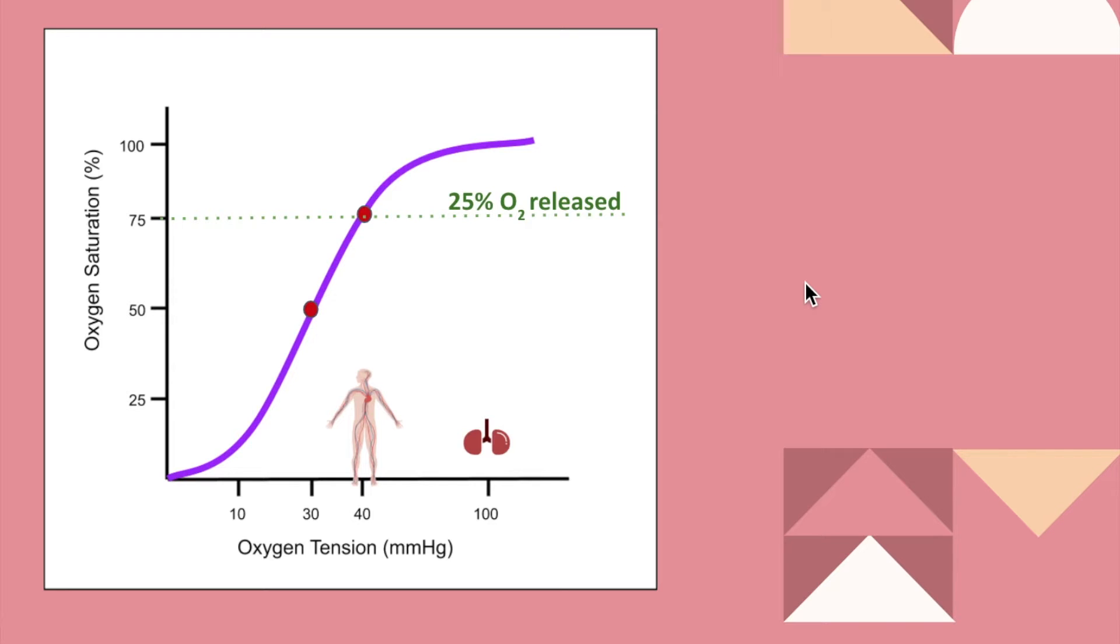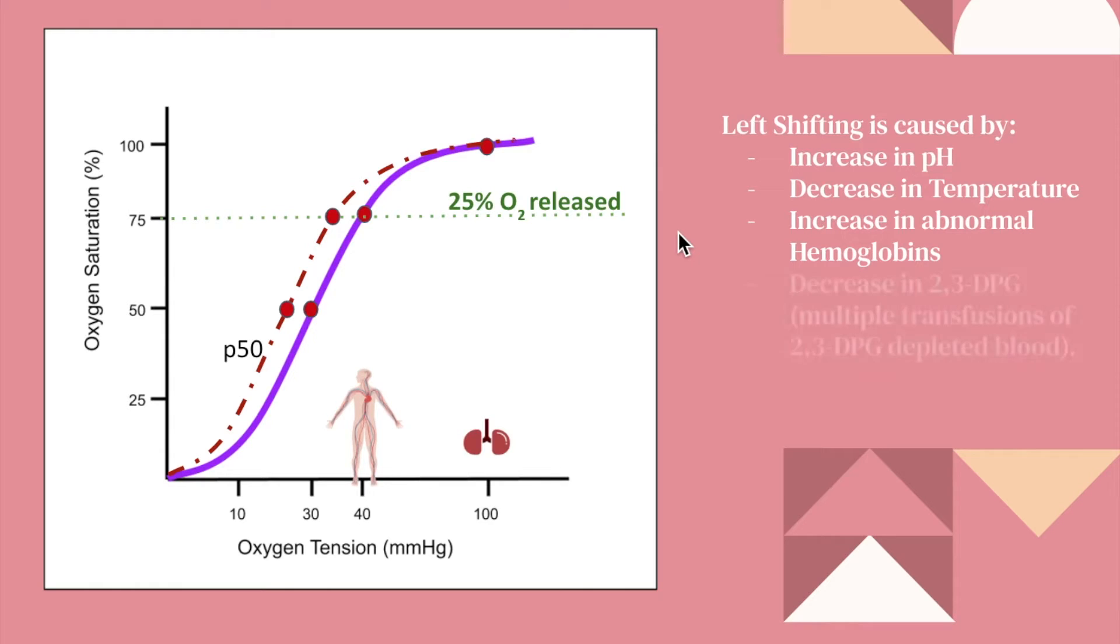So we're going to talk about left shifting now. So what does that mean? That means you're not giving away your oxygen readily because it's complete opposite from the one earlier. So what's the causes of left shifting? There's increase in pH, decrease in temperature, increase in abnormal hemoglobins, and decrease in 2,3-DPG. So what does 2,3-DPG do? It makes your hemoglobins easier to unload oxygen, right? So if there's a decrease in 2,3-DPG, that means it's now holding on to your oxygen more. It's not giving it away to your tissues.